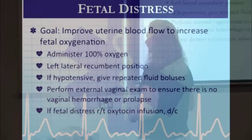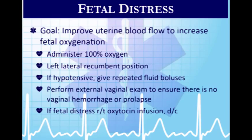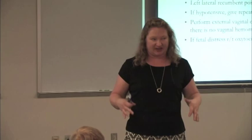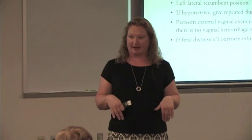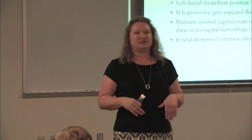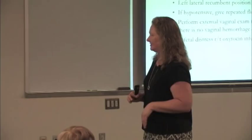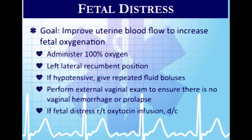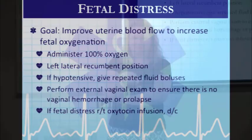If the fetus is in distress and fetal heart tones are too low, we need to provide emergent care to oxygenate the infant. Give 100% oxygen to preserve mom's blood flow and get blood returned to her heart so she can pump it to the baby. The best position for mom is left lateral recumbent, taking pressure off the inferior vena cava so blood flow can return to circulation. If mom is hypotensive, give repeat fluid boluses.